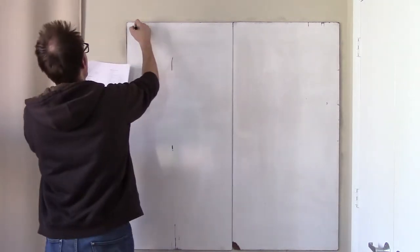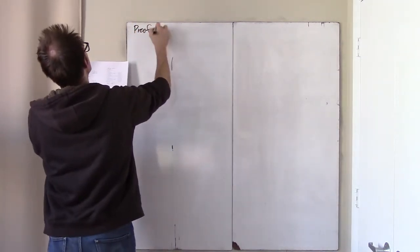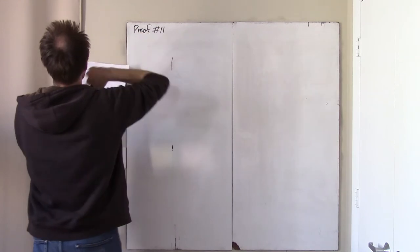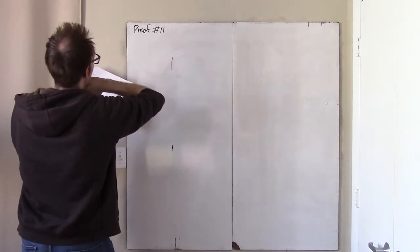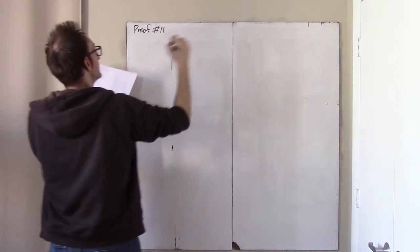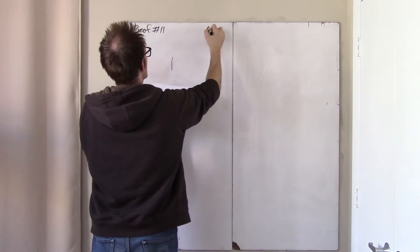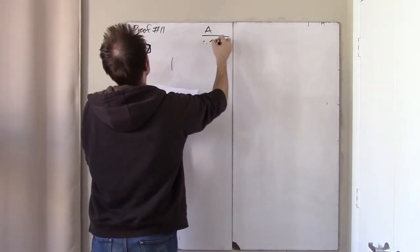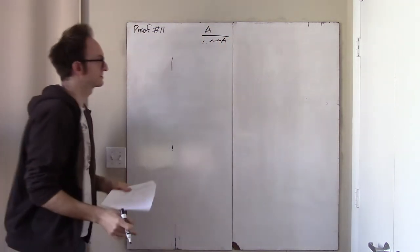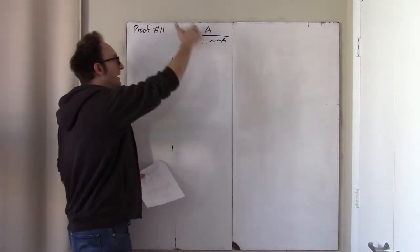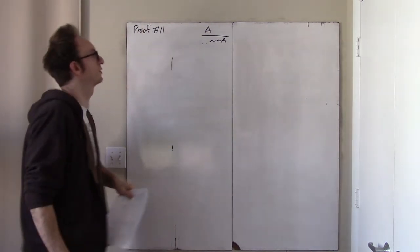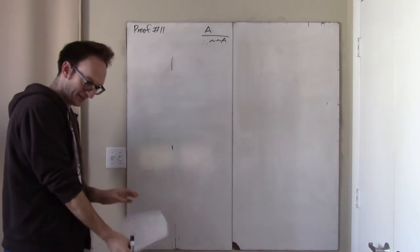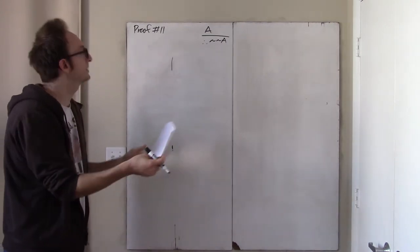Proof number 11. What is proof number 11? It says: prove not-not-A from A. So this says this. Maybe that's kind of silly, but if you know something, then you know that it's not the case that it's not the case that that thing. Okay, we do it.